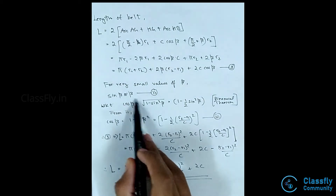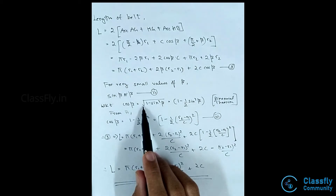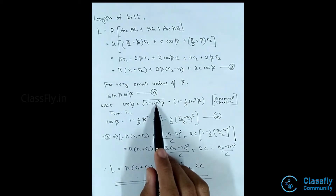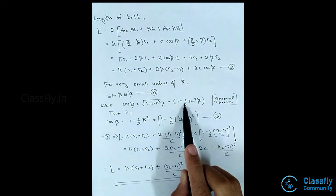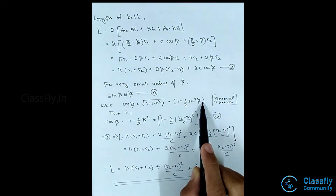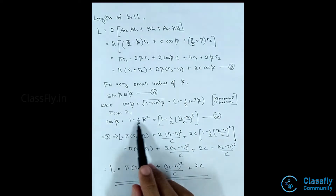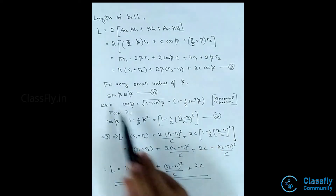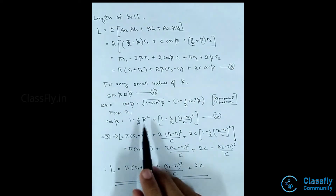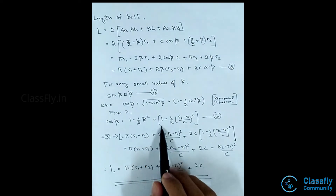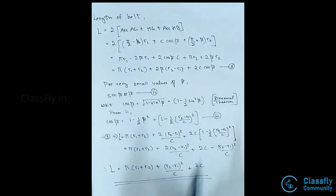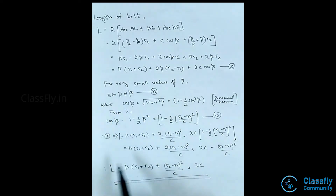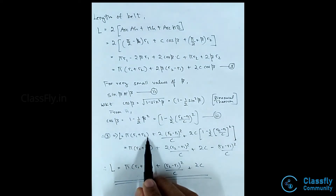For very small values of beta, sine beta ≈ beta. Also, cos beta = sqrt(1 - sin²beta), which by the binomial theorem simplifies to 1 minus half sine squared beta. Hence cos beta ≈ 1 - (1/2)*beta². Substituting beta = (r2 - r1)/C, we get cos beta ≈ 1 - (1/2)*((r2 - r1)/C)².